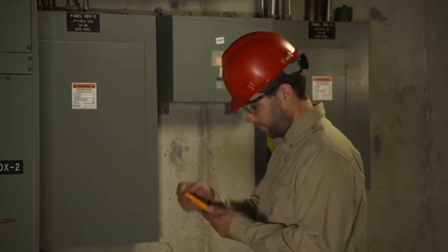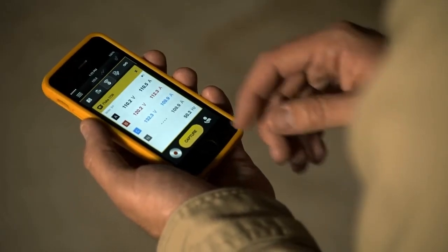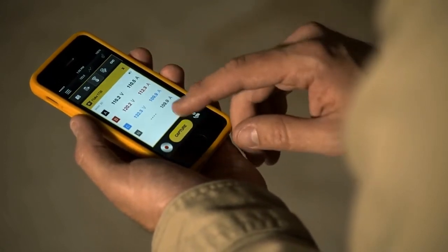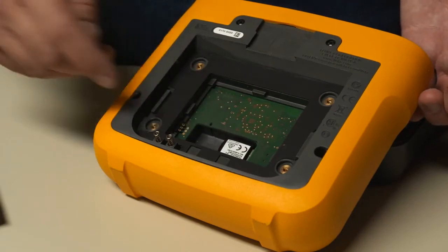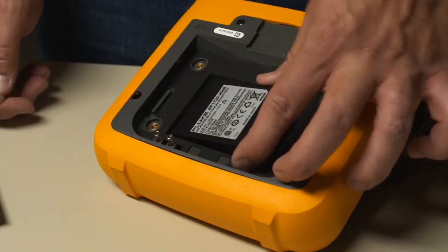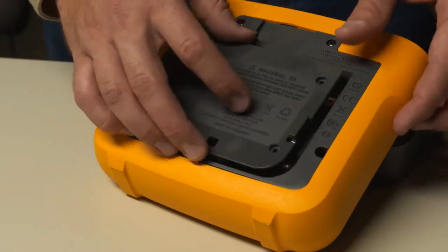Plus, the Fluke 1736 and 1738 are now compatible with the Fluke Connect mobile app and desktop software. With a simple addition of a wireless adapter, the Fluke 1736 and 1738 can be made accessible from anywhere.